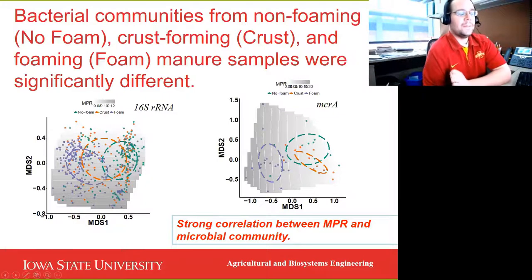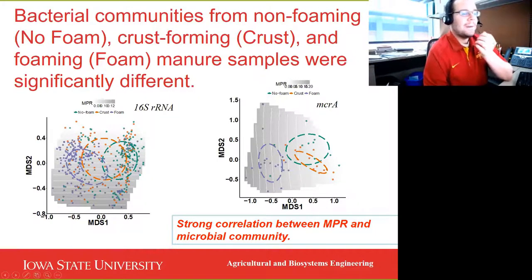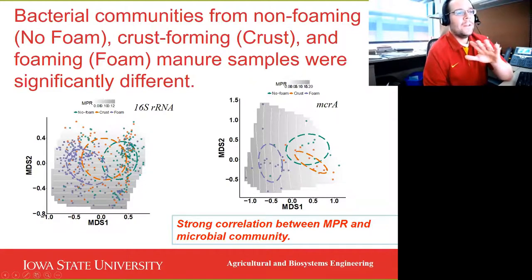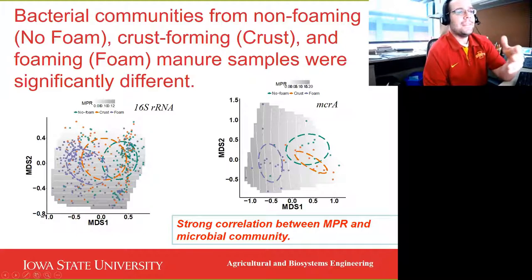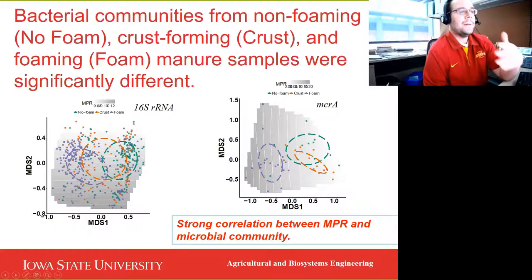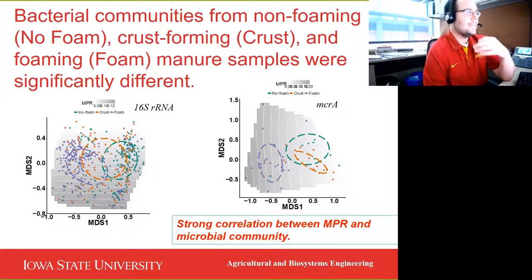Now, you might be saying we should capture these microbes and throw them in an anaerobic digester. While that sounds great, I will caution that the majority of the methanogen population over here — about 50% of it — was of unknown methanogen type. So we really just don't know much about them, which makes even cultivating them relatively difficult.